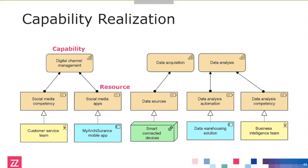This is where you get into the older ArchiMate concepts — the concepts at the bottom of this picture are the ones you already have, and you can relate them to the higher-level strategic concepts of resource and capability. For the data-driven insurance part of the strategy, you need data sources and the competency to analyze this data. We also see where these data sources come from — this is the equipment concept, and here I've modeled smart connected devices, the Internet of Things.